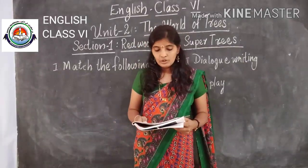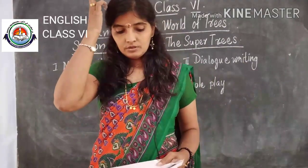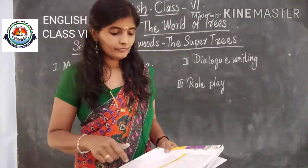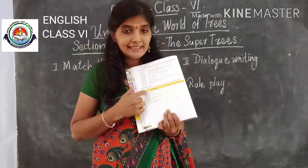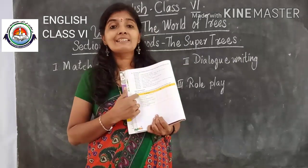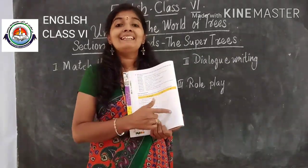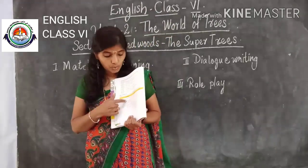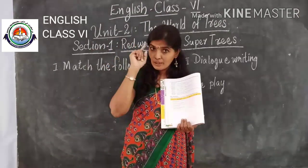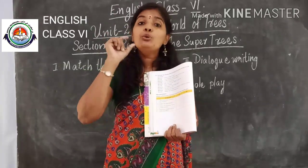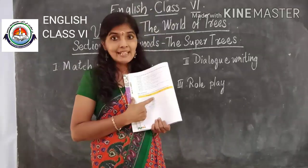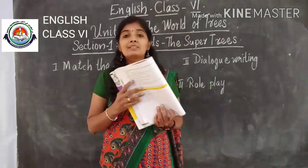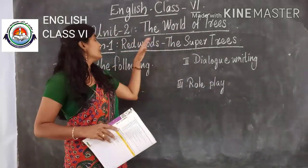Now look at the table — there is a table which asks you to fill in the details of this dialogue from your friend's part: how do you feel about your friend's performance. Since that is not very easy, what you can do is answer it for yourself — how you performed while doing this dialogue. Write it here and answer accordingly. That's all about Unit 2 Section 1, Redwoods: The Super Trees.